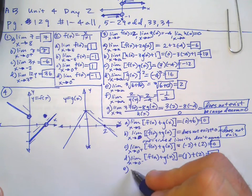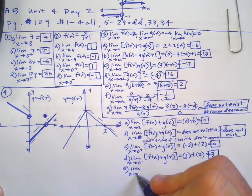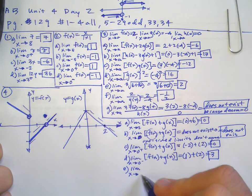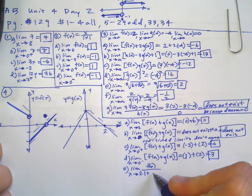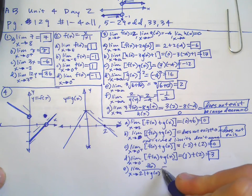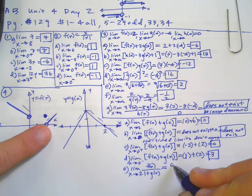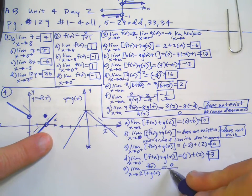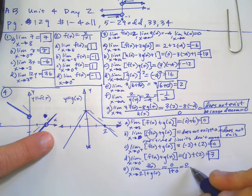Part E: limit as X approaches two of F of X over 1 plus G of X is going to be zero over 1 plus 0, which is 0 over 1, which is 0.